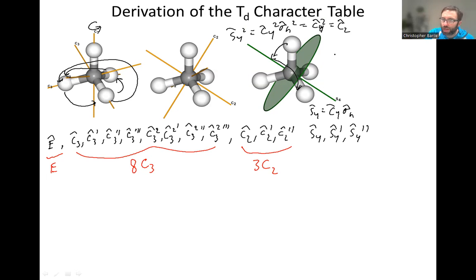But S4 three times is going to be equal to C4 three times, followed by sigma H three times, which sigma H three times goes top, bottom, bottom, top, top, bottom. So that's just equal to sigma H, and this is a unique operation. So the S4 three, we have that.